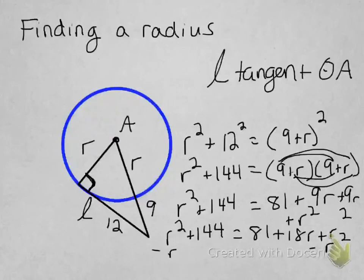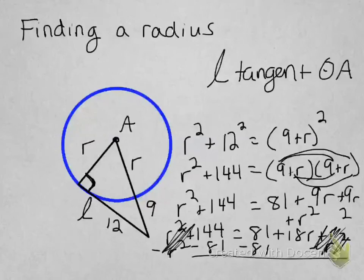Subtract r squared from both sides. It's gone. I'm left with 144 equals 81 plus 18r. Subtract 81 from both sides.